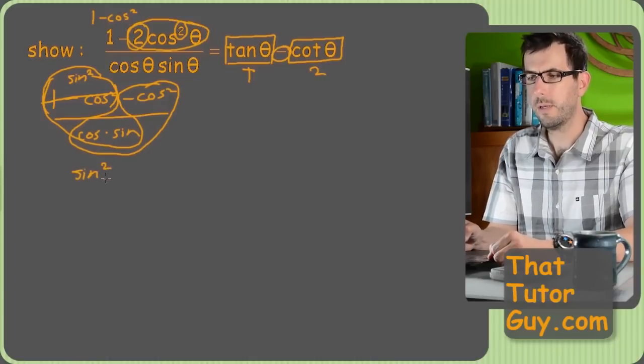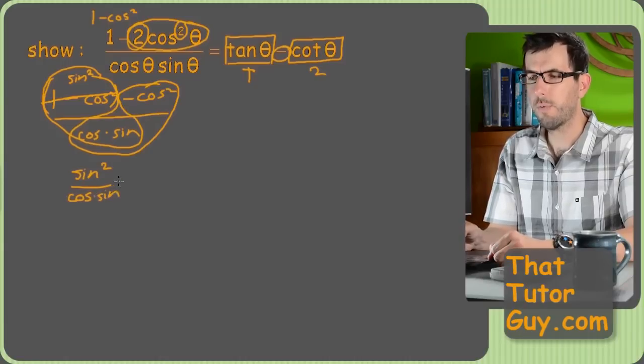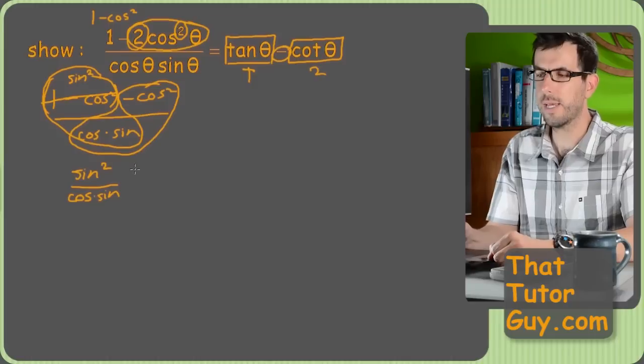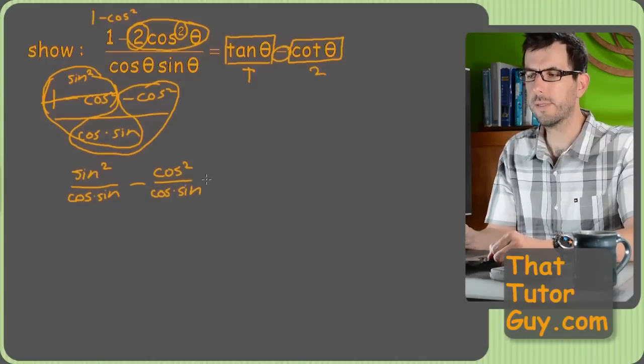We'll get sine squared over cosine times sine. And this is already looking good because it looks like a sine will cancel. And then minus cosine squared over cosine times sine. And now a cosine is going to cancel. So that's pretty good.